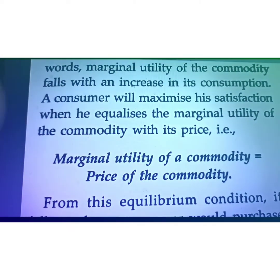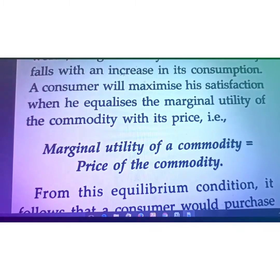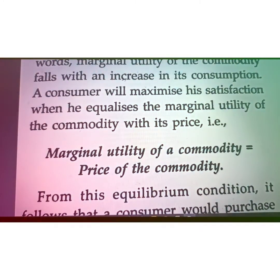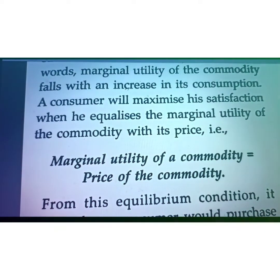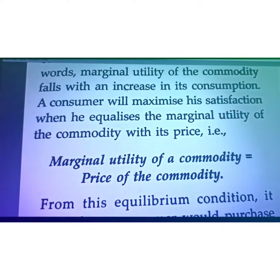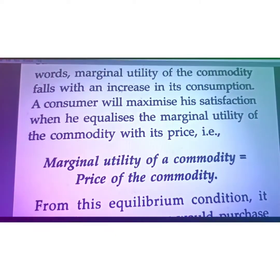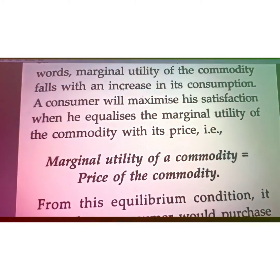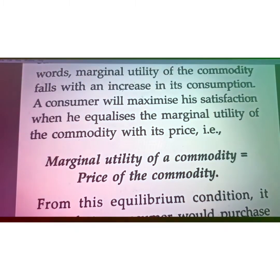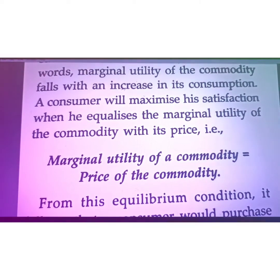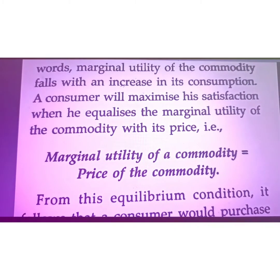So clearly, when you are willing to pay a higher price, your satisfaction level is very high. But as soon as your satisfaction level comes down, you are not willing to pay more. You will stop purchasing when the price of the commodity equals the marginal utility of the commodity. When you paid 50 rupees for a cold drink of 30 rupees, you were not in equilibrium. But when you are ready to pay only 30 rupees for that cold drink, you are in equilibrium — meaning marginal utility equals price.